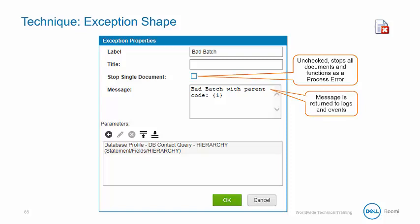This is where you have a combination of static and dynamic data to create a custom error message. You can use parameters defined by numbers in curly brackets to reference dynamic data.